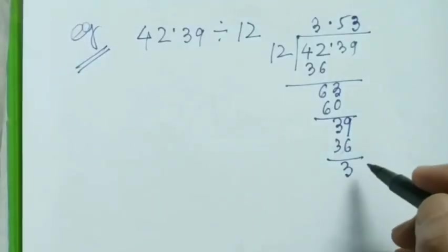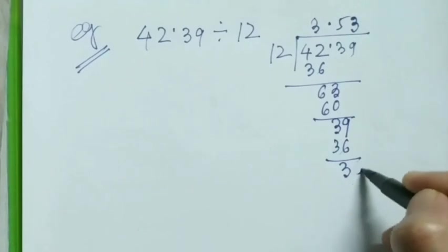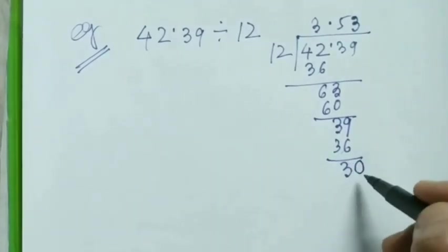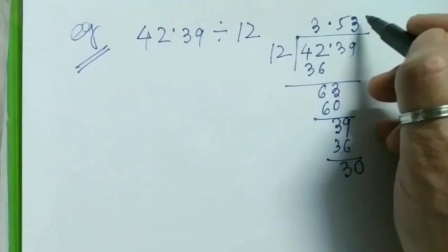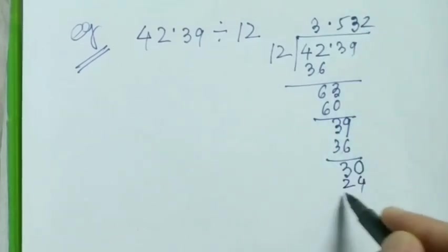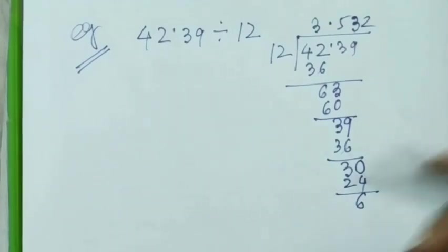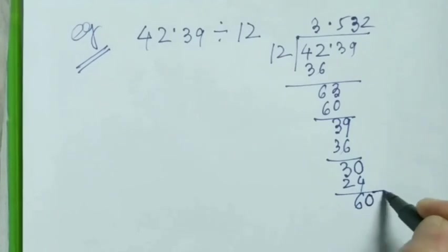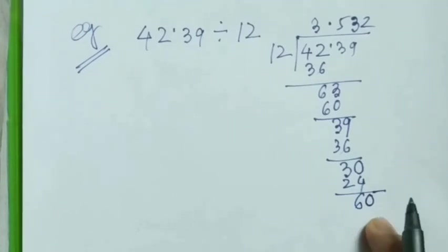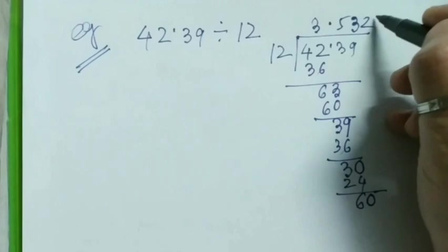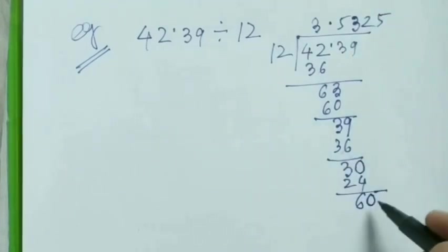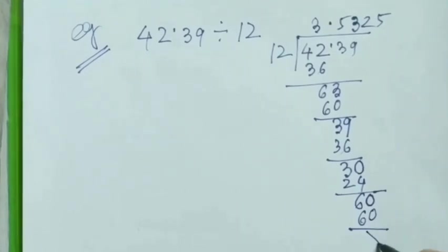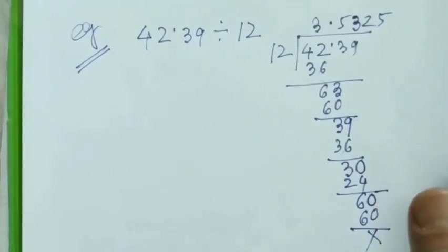In this case I'm adding zero here. This becomes 30. 12 into 30 is 2, remainder 6. Again, by the rule of division, I'm adding one zero here. 12 into 60 is 5. Now there is no remainder - it's zero - so our sum is complete.